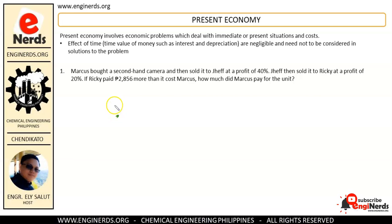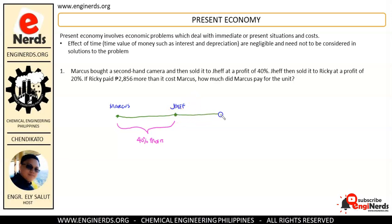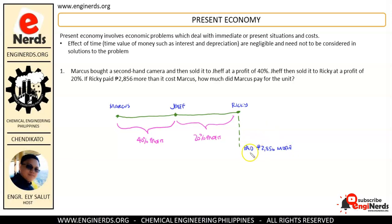Let me illustrate this. This is where Marcus bought the second-hand camera, and then he sold it to Jeff at this point, with 40 percent profit. After that, Jeff sold it to Ricky with 20 percent profit. It is given that Ricky paid 2,856 pesos more than what Marcus paid. So Ricky paid 2,856 more than Marcus.